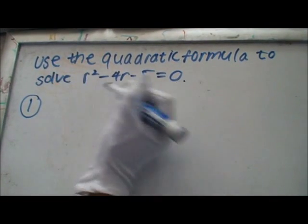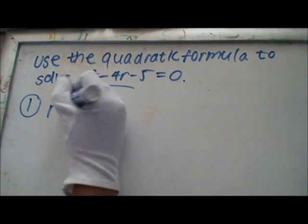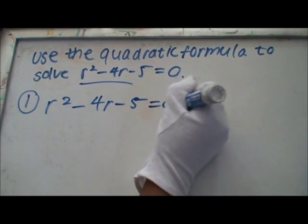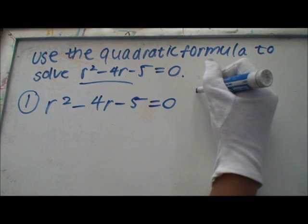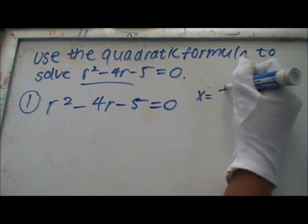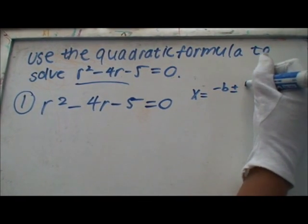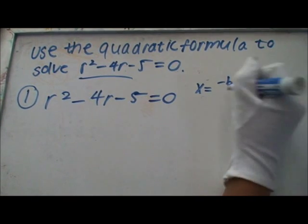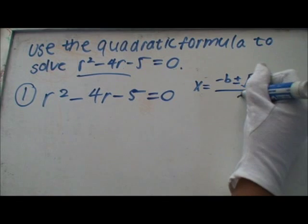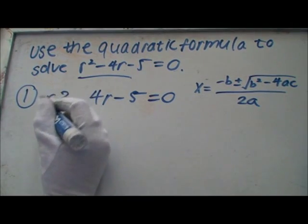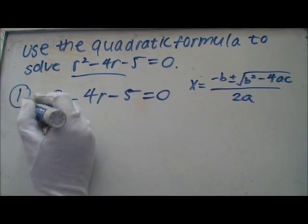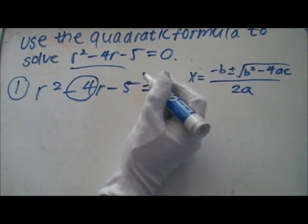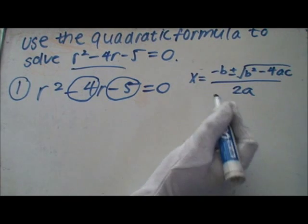So, first you solve this equation. Use the quadratic formula. Plug it in. So, there is no coefficient here, and this is a. Negative 4 is b and negative 5 is c.